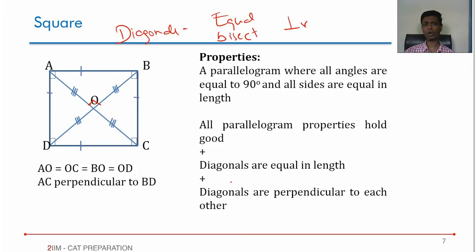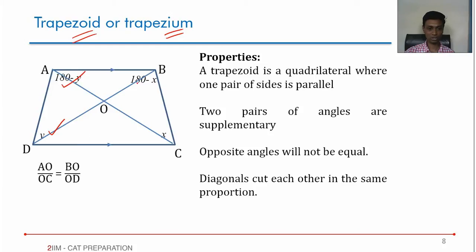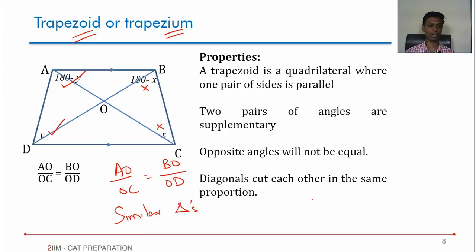Leaving the parallelogram, we go beyond to a shape where only one pair of sides is parallel, called a trapezoid or trapezium — the American system calls it trapezoid, the British system calls it trapezium. In any trapezium, one pair of sides is parallel, so these two angles will be supplementary — two parallel lines cut by a transversal. But opposite angles need not be equal; if they were, it would become a parallelogram. One important property: the diagonals of a trapezoid cut each other in the same proportion — AO over OC equals BO over OD. You can prove this using similar triangles.